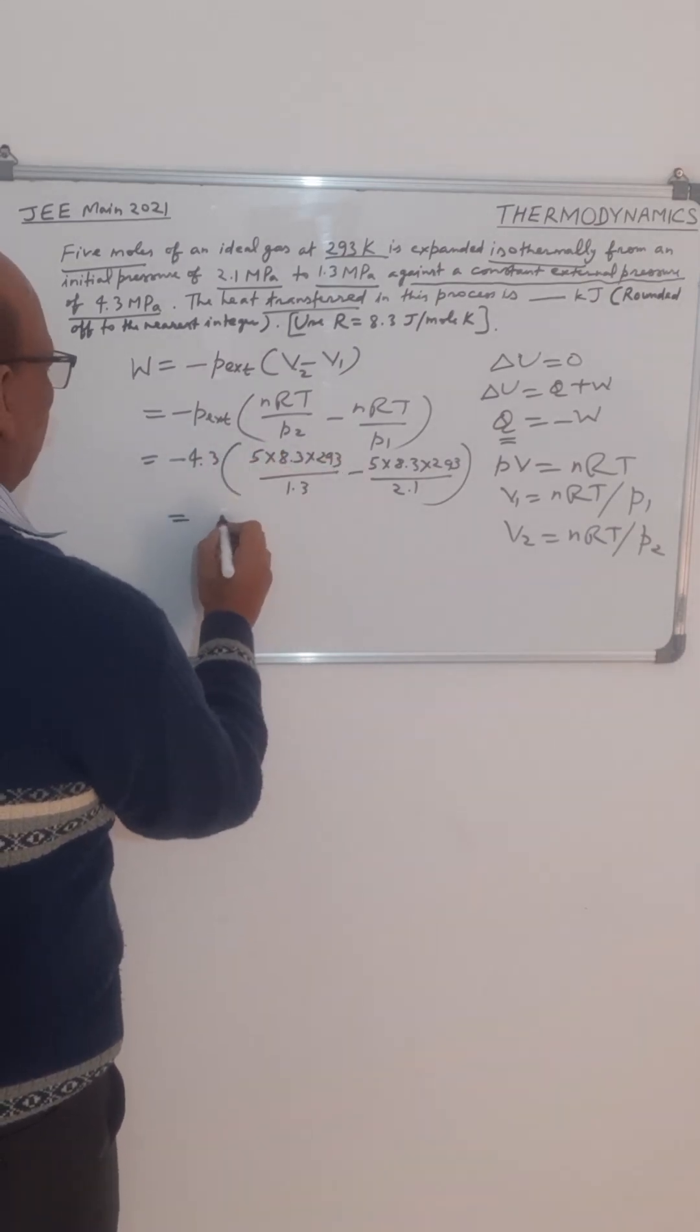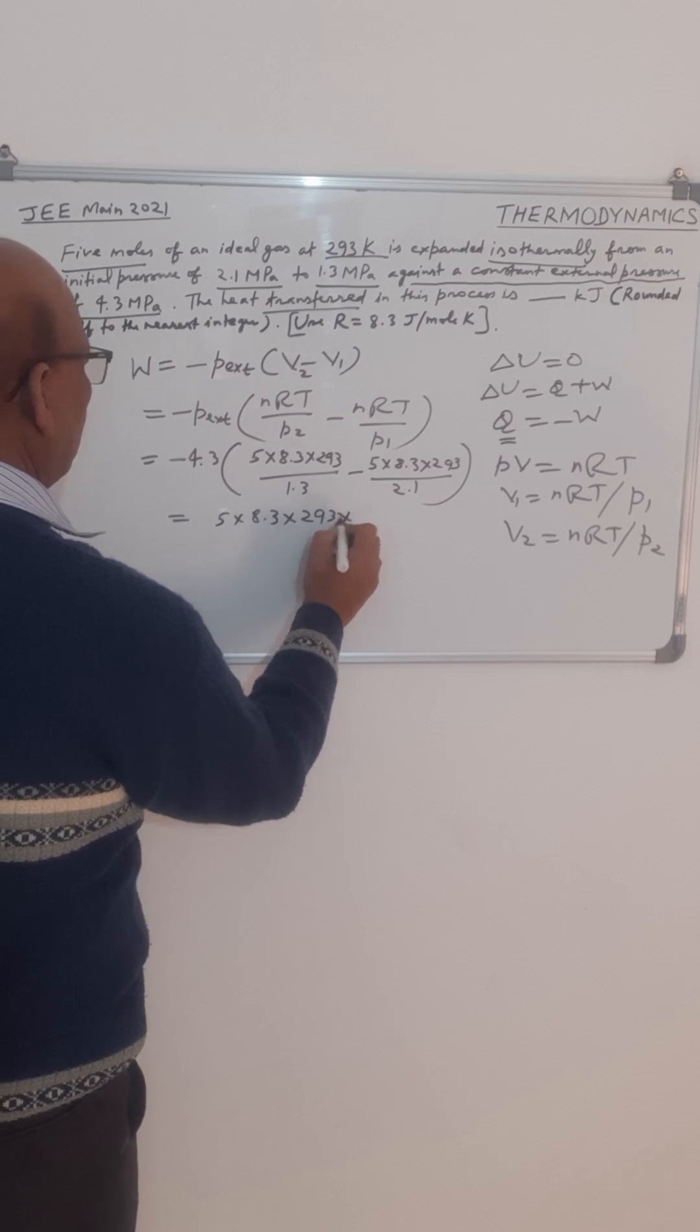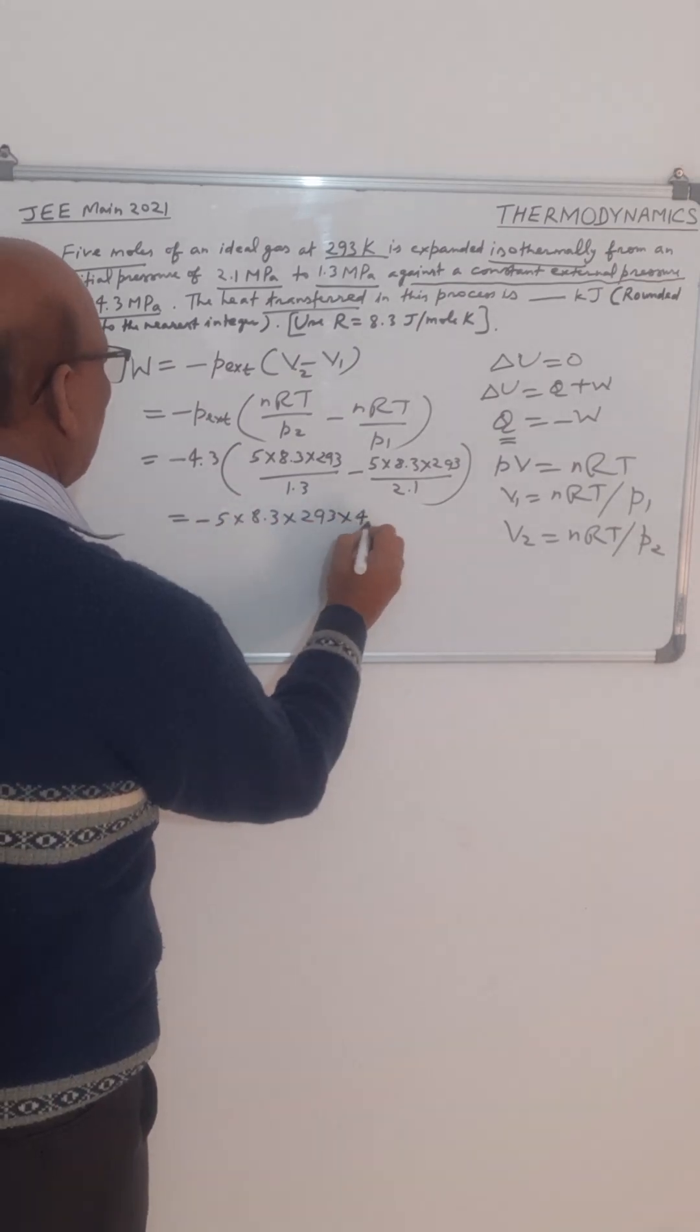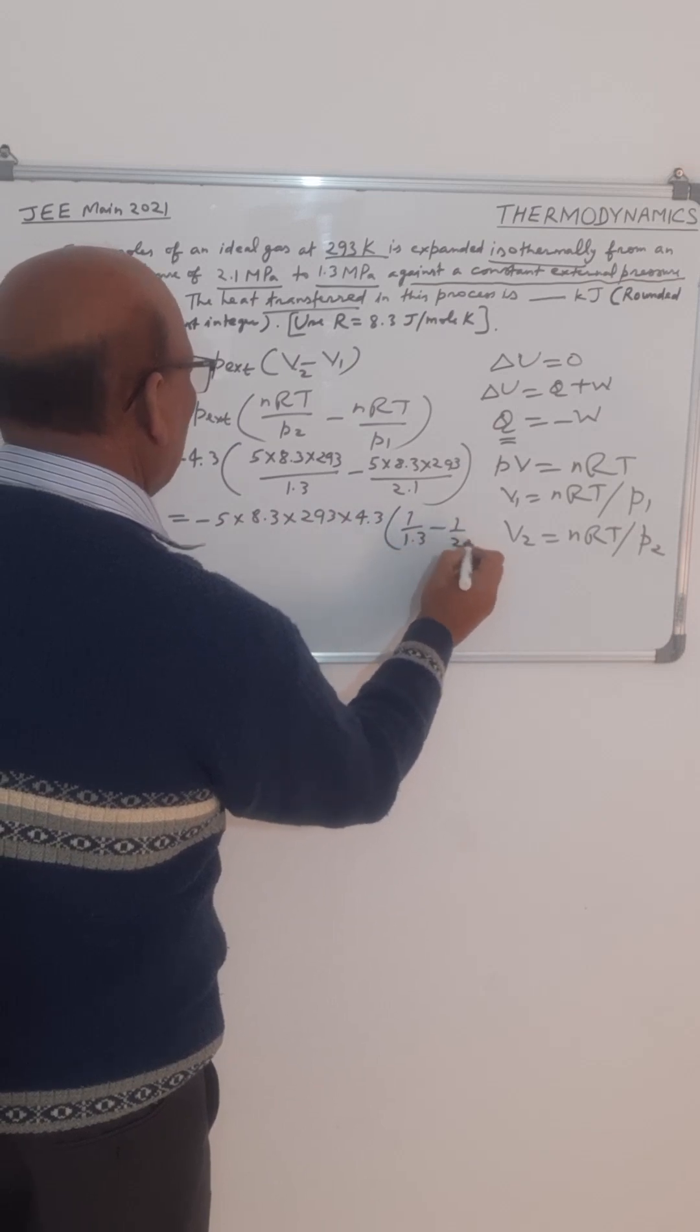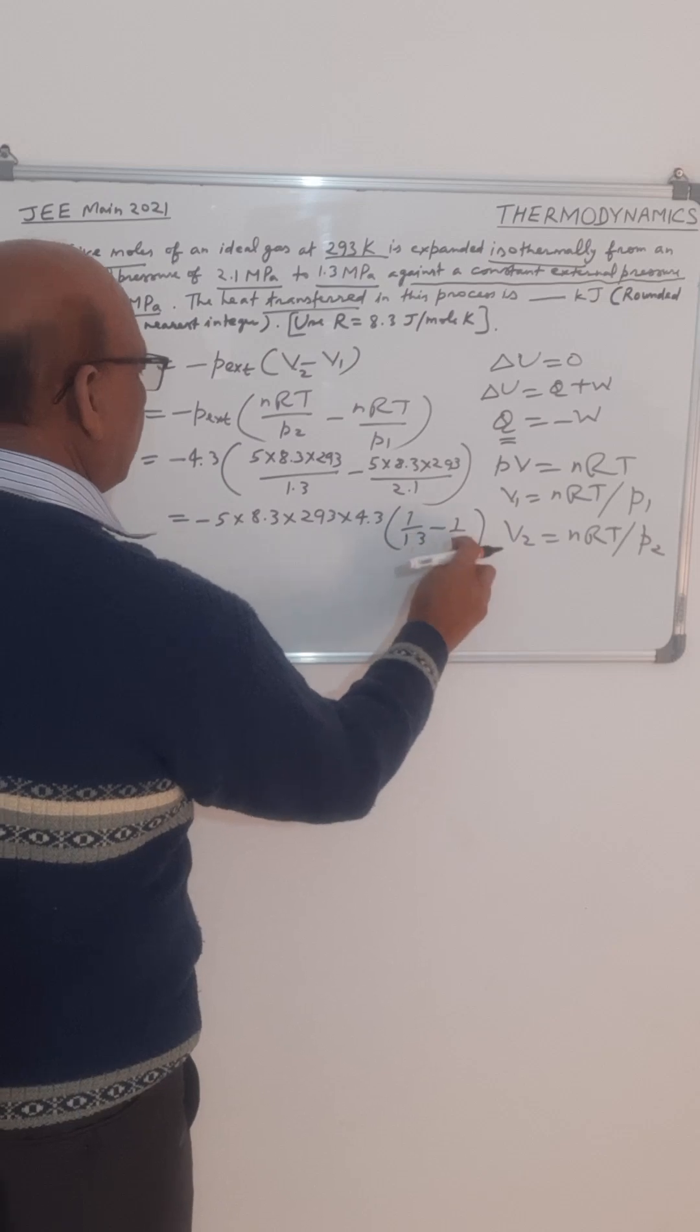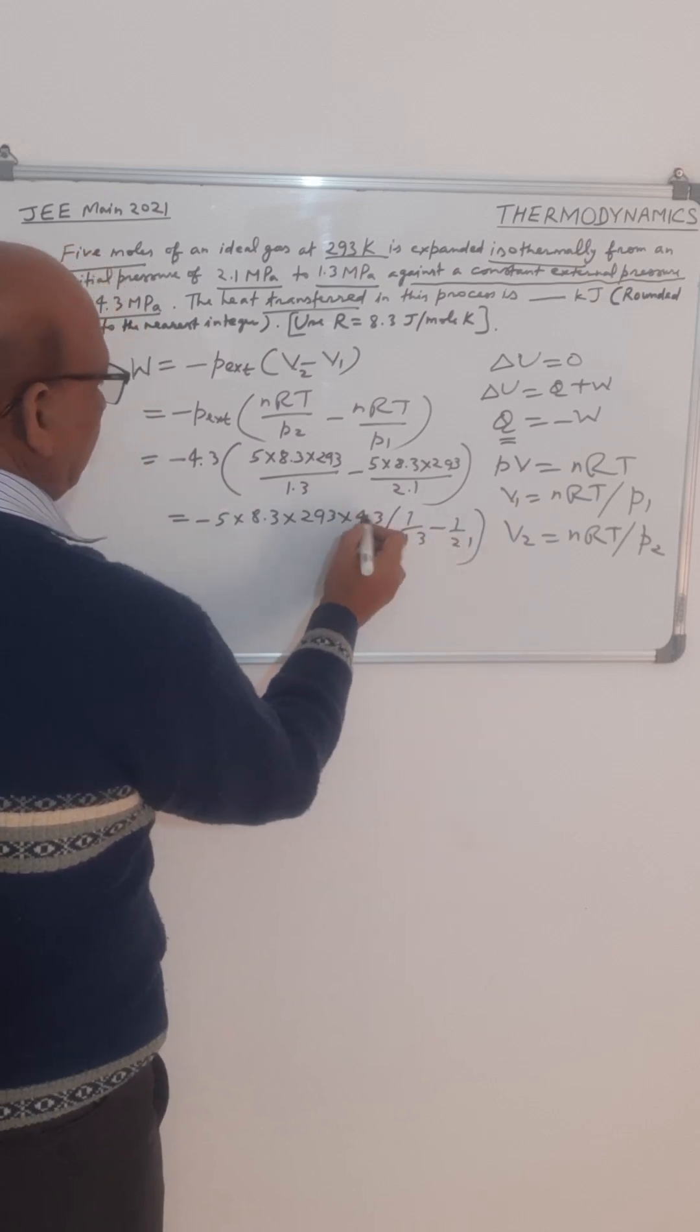Now this will come from here, so we will get 5 into 8.3 into 293 into, this will be minus, into 4.3 into 1 upon 1.3 minus 1 upon 2.1. So this decimal we can replace and we can multiply by 10, so this will become 43.